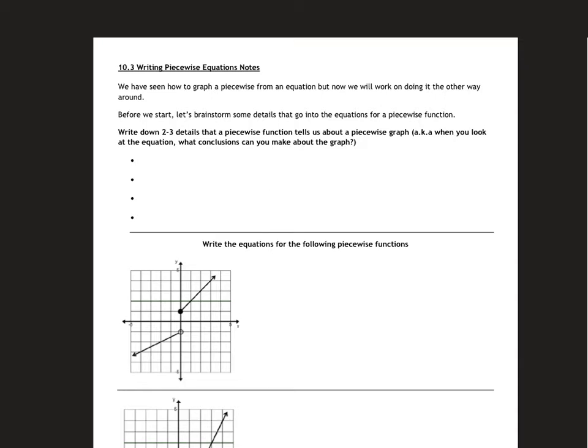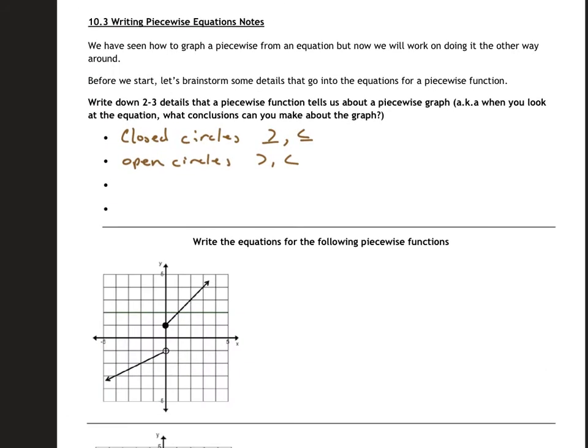Write down two or three details that a piecewise function tells us about a piecewise graph. What conclusions can you make about the graph? So a few of them that I know off the top of my head, you can pause this and go with it. Closed circles are going to be greater than or equal to or less than or equal to. Open circles be greater than or less than. Some few other ones: x² is a parabola, so u-shape graph. Arrow is with one boundary. Line is mx plus b. Number is a horizontal line.